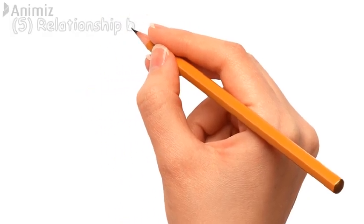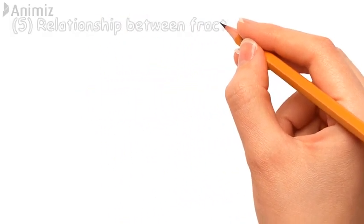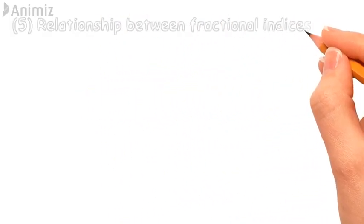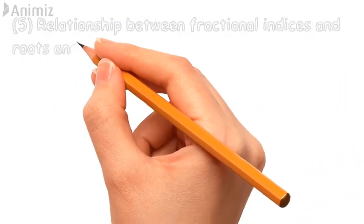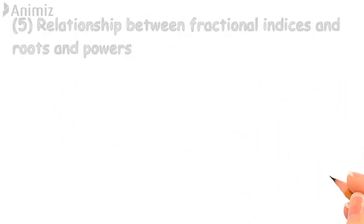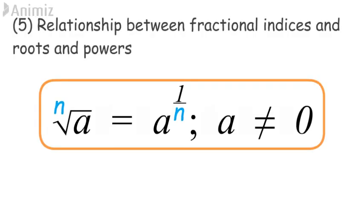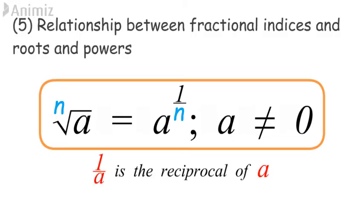Fifth law: the relationship between fractional indices and roots and powers. The n-th root of a equals a to the power of 1/n, where a ≠ 0. Also, 1/a is the reciprocal of a.